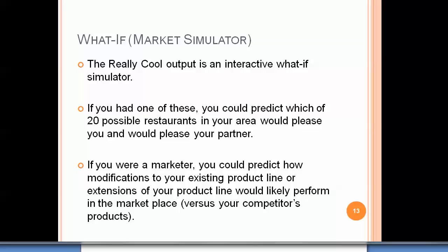What we get is a really neat market simulator — an interactive tool to help you figure out how people make decisions, to figure out what's going on in their brains. With one of these, you could predict which of possibly 20 restaurants in your area would please you and your partner. If you're a marketer, you could predict how modifications or extensions of your product line would likely perform in the marketplace versus your competitors' products. That would be a really powerful thing to have.